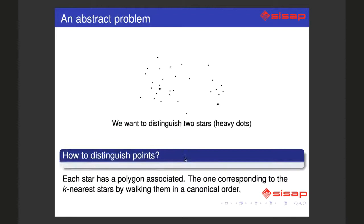In abstract, what we have is one blob of points. In this case we have two heavy dots representing stars.